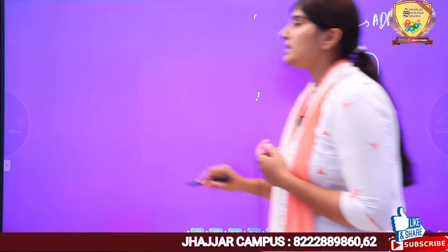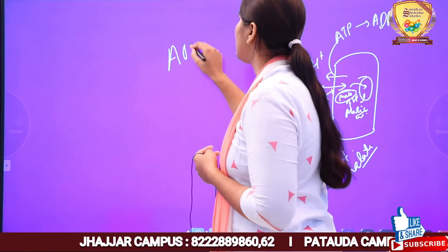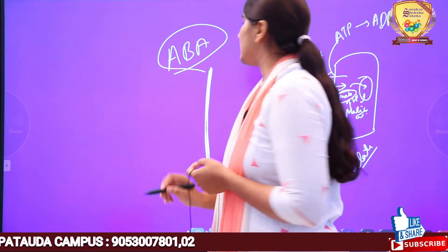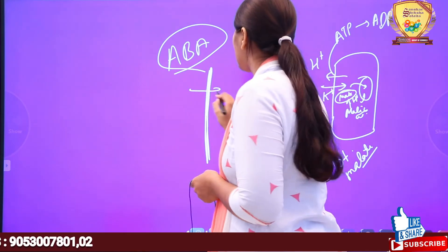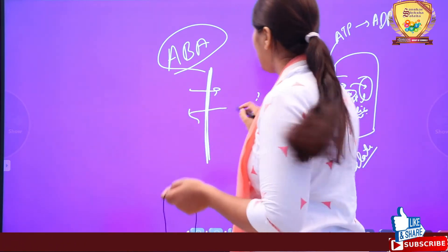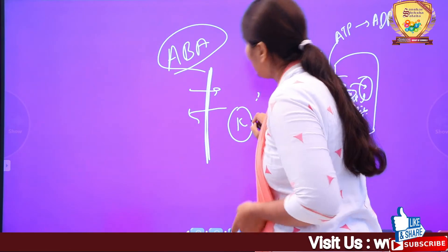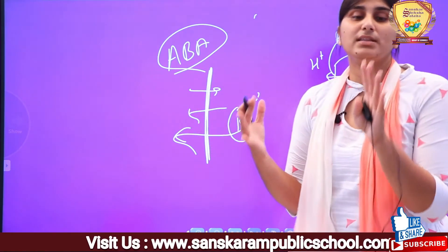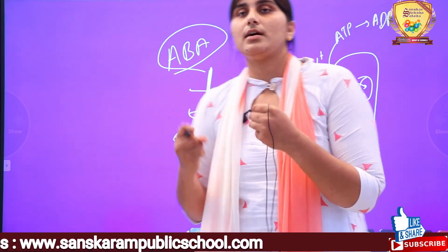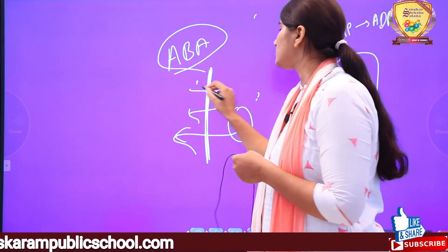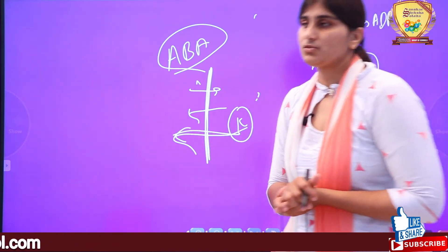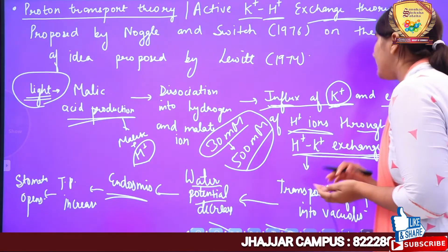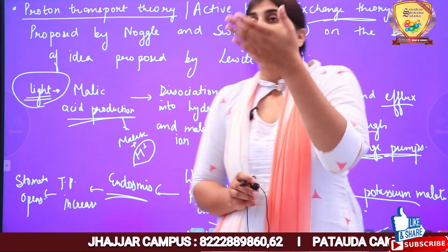Stomata खुल तो गया — closing के लिए क्या होगा? एक hormone होता है plant में — ABA, Abscisic Acid। Abscisic acid membrane की permeability को बदल देगा। अब K+ अंदर नहीं आ सकता, H+ बाहर नहीं जा सकता। Cytoplasm में जो K+ है उनको बाहर जाना पड़ेगा क्योंकि membrane की permeability बदल गई है — membrane H+ को अंदर आने देगी और K+ को बाहर throw करेगी। ABA is the plant hormone which induces closing of stomata।